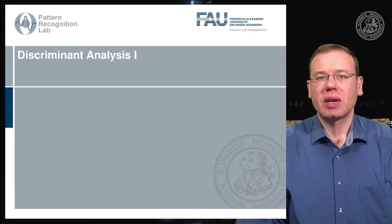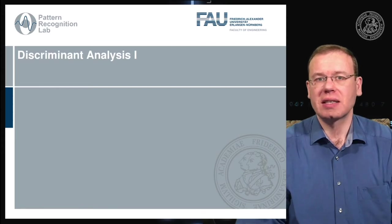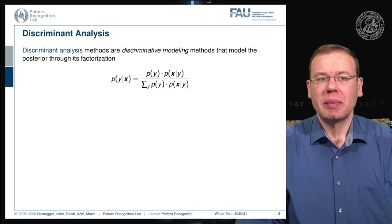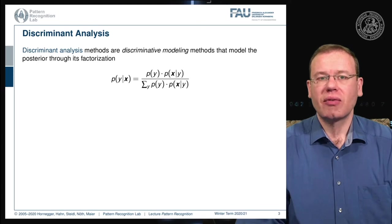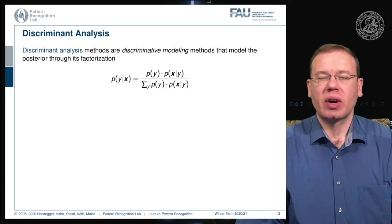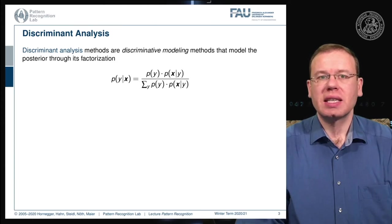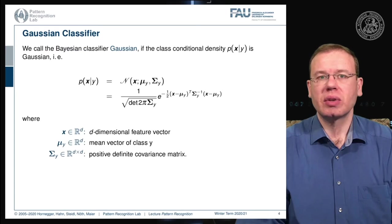The path we are going towards is discriminant analysis, which is essentially one way to think about using classes and feature transforms. We will remember that discriminant analysis involves discriminative modeling, where we decompose the posterior using class priors and class conditionals. Using Bayes' theorem and marginalization, we arrive at the following observations, and we will now choose a specific form of distributions for our probabilities.